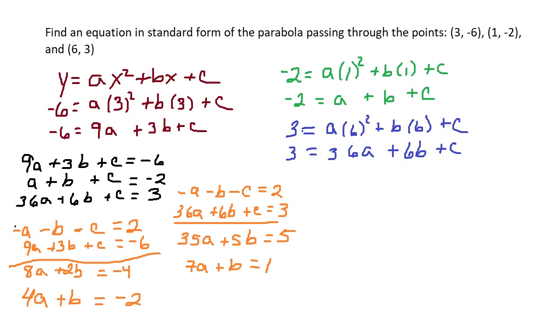So, negative 1 times 4a is negative 4a. Negative 1 times b is negative b. Negative 1 times negative 2 is 2. Add, and we get 3a. B's cancel equals 3. Divide by 3, and we get a equals 1.